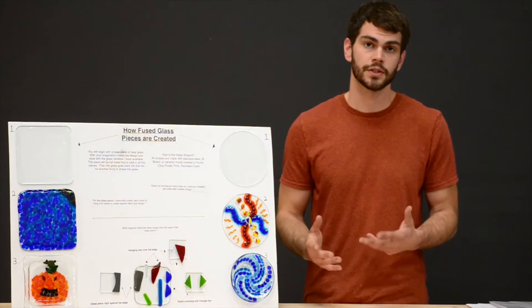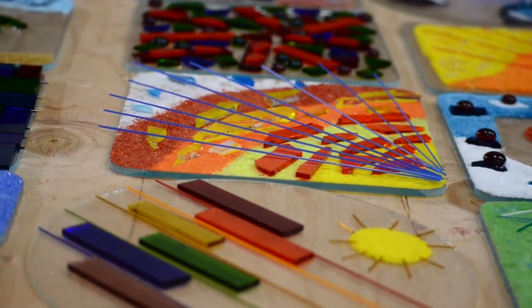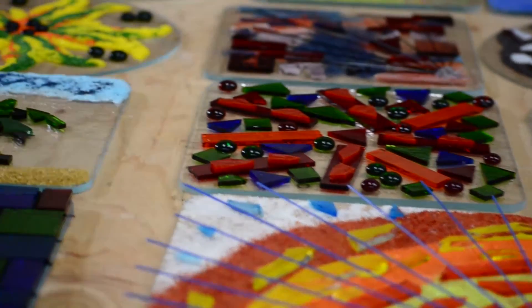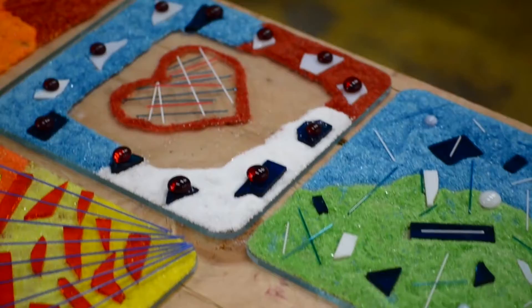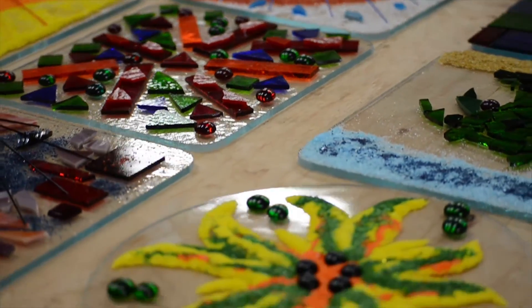Once you're finished, your project will then undergo two different firings. The first firing will be to melt the glass into a single piece. Then, the second firing, we will use a mold like this to shape it.